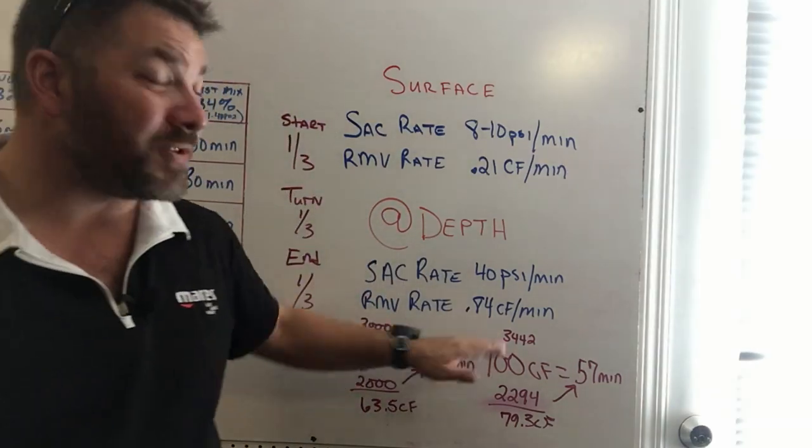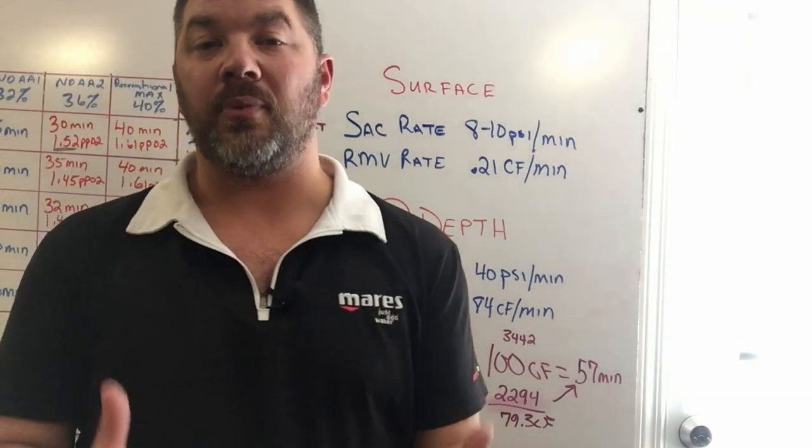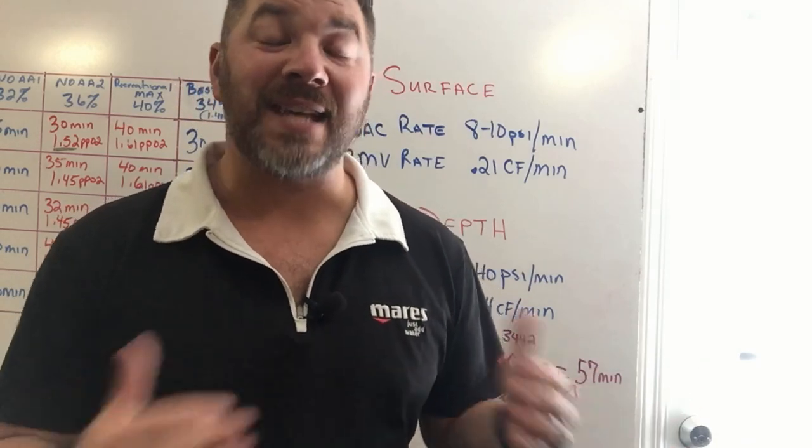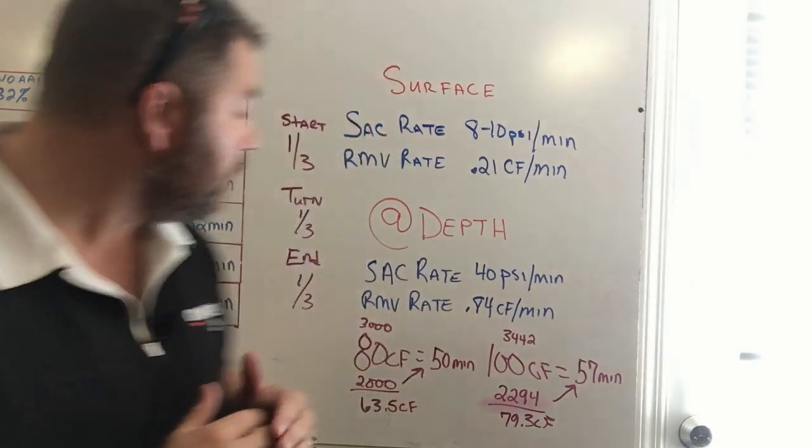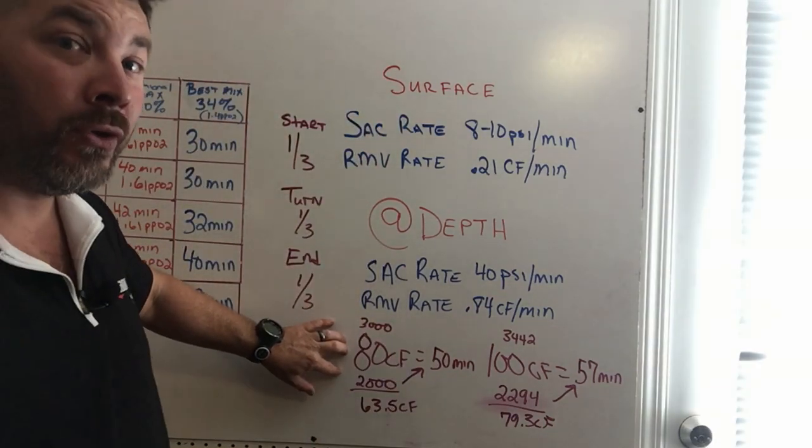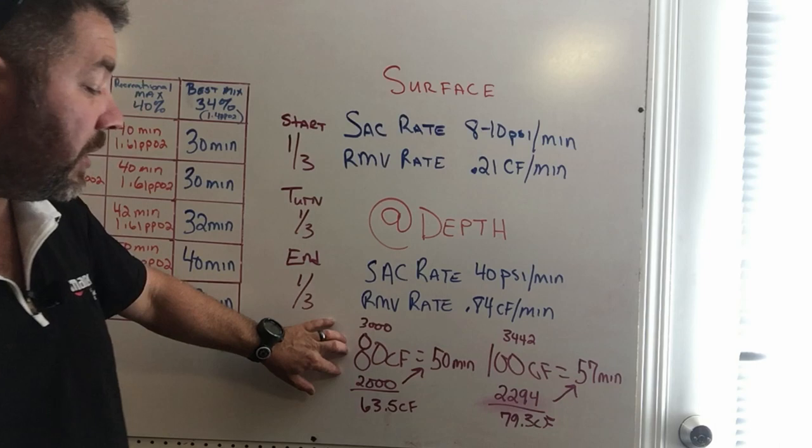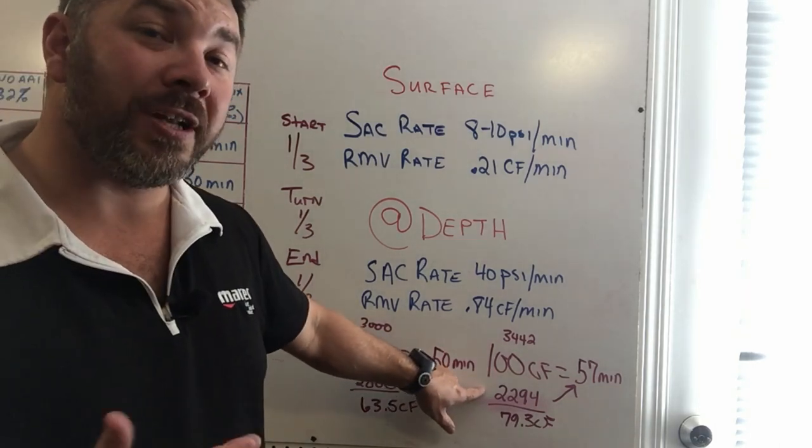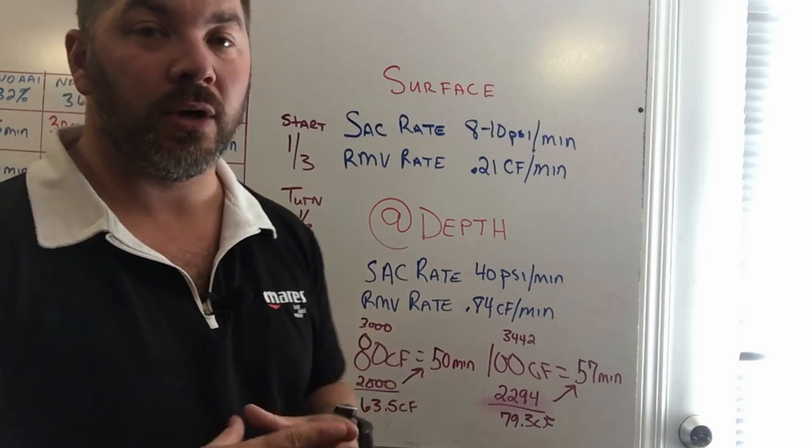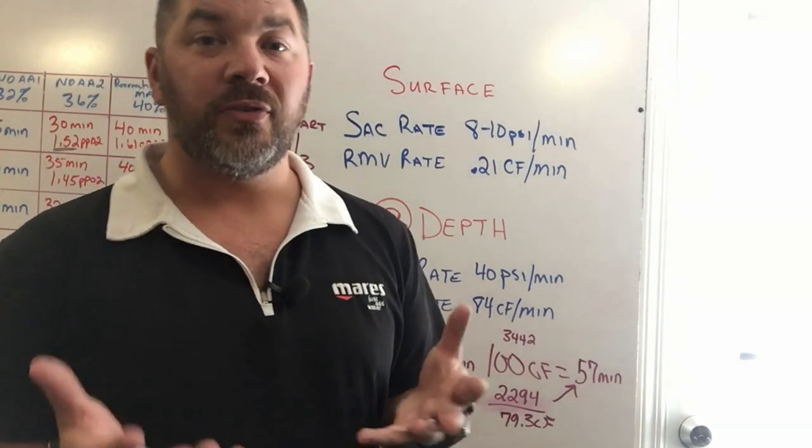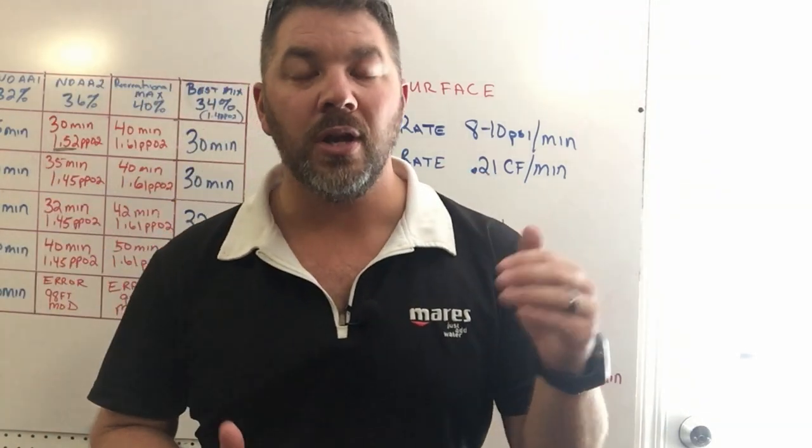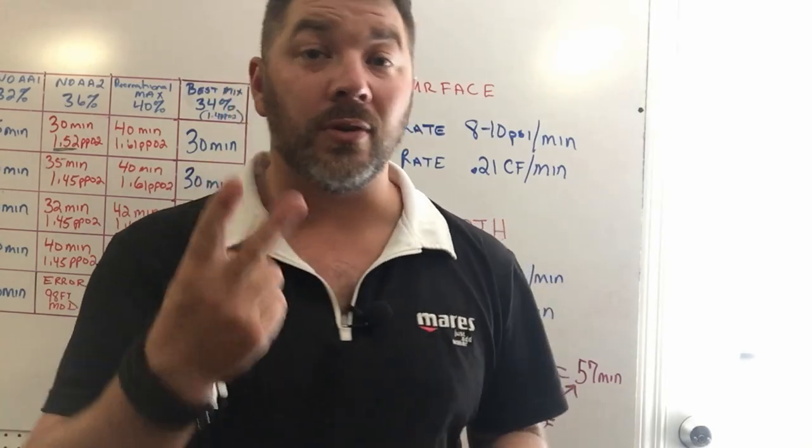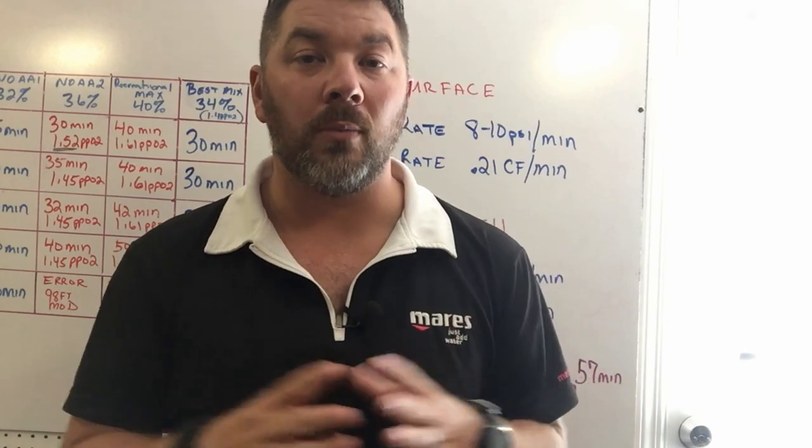Now here's the problem with both of those: I can't actually use the working pressures of the cylinder because if I did I would probably run out of gas. I need to base it off the rule of thirds. So based off the rule of thirds, two-thirds of the workable pressure is 2000 for the aluminum 80 and 2294 PSI for the steel 100. The way I come up with that number is very simple: you take your working pressure, divide it by three to determine what a third is, and then times it by two to get your two-thirds or workable gas.